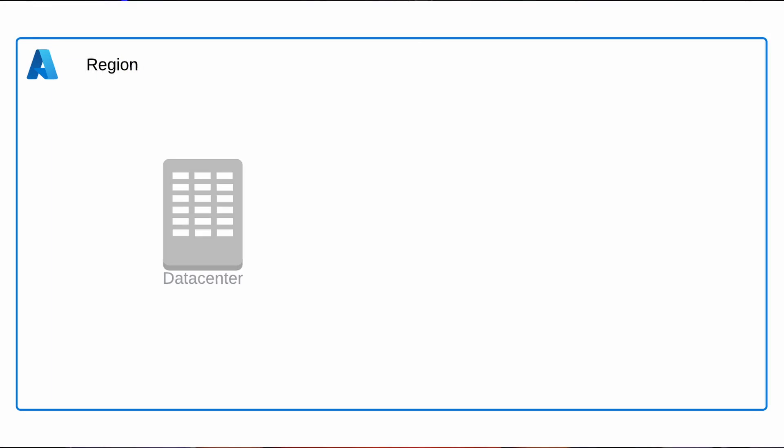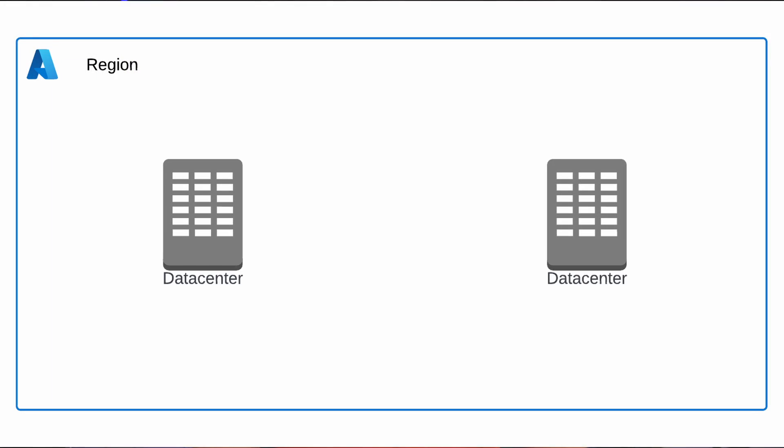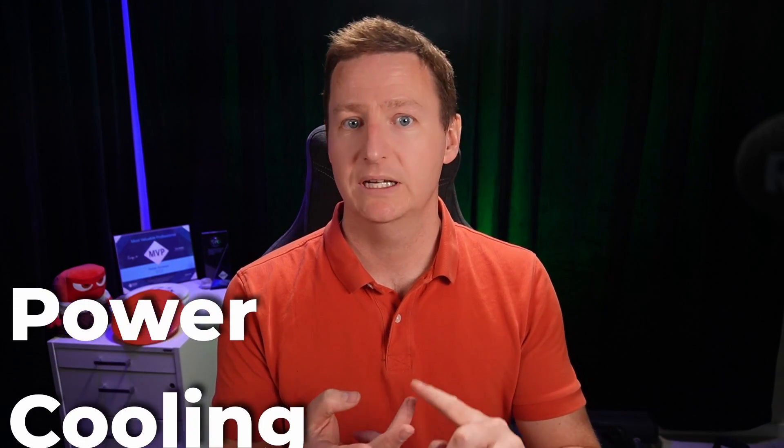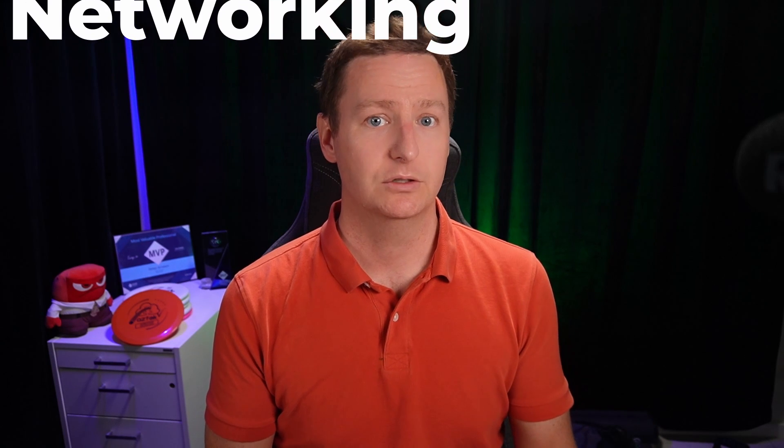An Azure region consists of at least two data centers deployed within a latency-defined perimeter. That means any given Azure region has at least two separate physical data centers that are totally independent of each other — meaning they have their own power, cooling, networking, and so on — but they are connected to each other by means of a low latency link. The requirement is for that link to be two milliseconds or below, so pretty low latency, but still noticeable if you're dealing with systems dependent on low latencies.